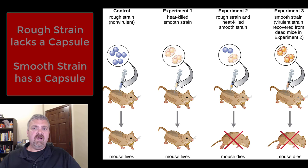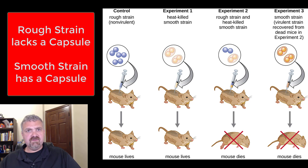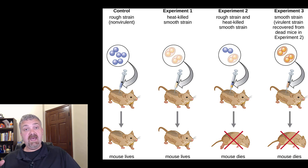First, you'll see a couple terms here: rough strains and smooth strains. What we're looking at here is what he would have called the rough strain would be a non-pathogenic, non-virulent strain of Streptococcus pneumoniae that didn't have a capsule around it. The smooth strain was a virulent, very deadly strain of Streptococcus pneumoniae that had a capsule around it.